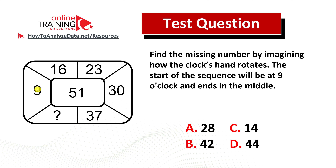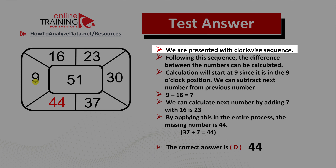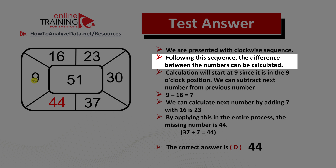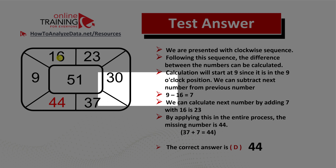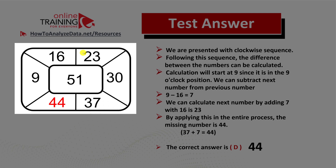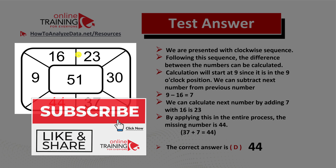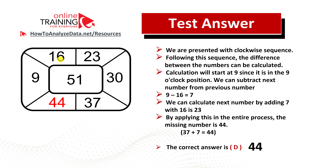Before we jump to the solution, let me pinpoint the sequence. Starting at nine o'clock: 9, 16, 23, 30, 37, then the missing number, then 51. Following the clockwise sequence, we can calculate the difference between consecutive numbers. For example, 16 minus 9 equals 7. Subtracting 16 from 23 also gives 7 — this suggests the sequence increments by 7 each time.